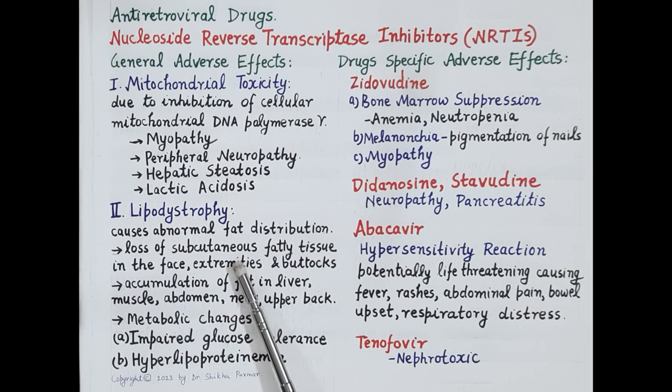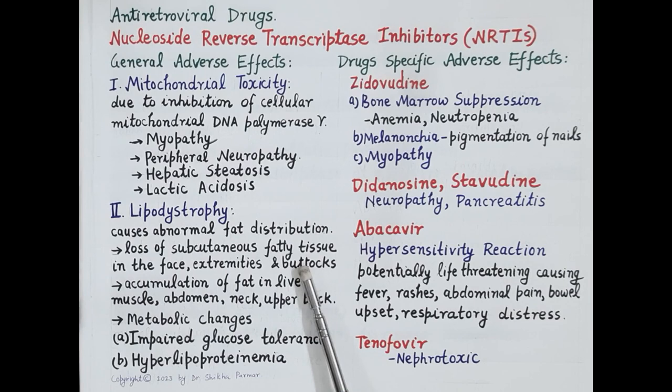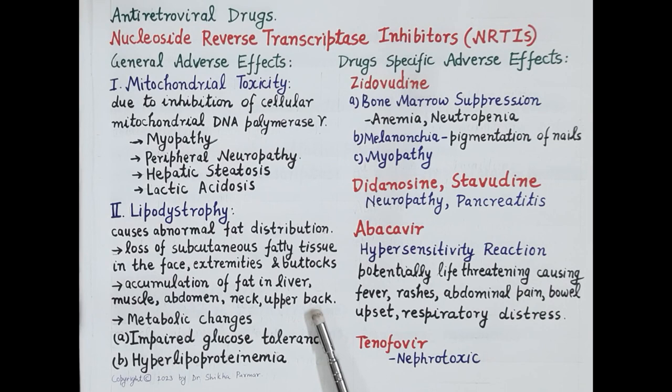Another adverse effect of these drugs is lipodystrophy, which causes abnormal fat distribution. There is loss of subcutaneous fatty tissue in the face, extremities (hands, legs), and buttocks — so these body parts tend to become thin. Instead, fat accumulates in the liver, muscles, abdomen, neck, and upper back. Metabolic changes include impaired glucose tolerance and hyperlipidemia characterized by elevated triglycerides, elevated total cholesterol, and reduced HDL.